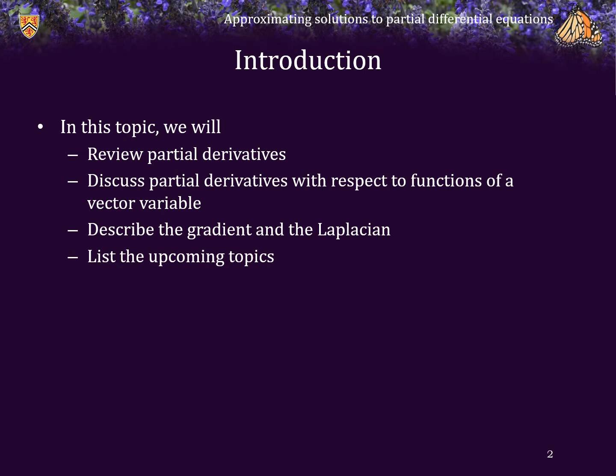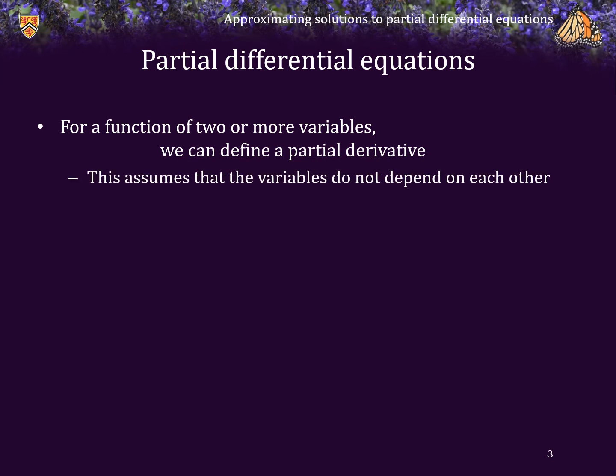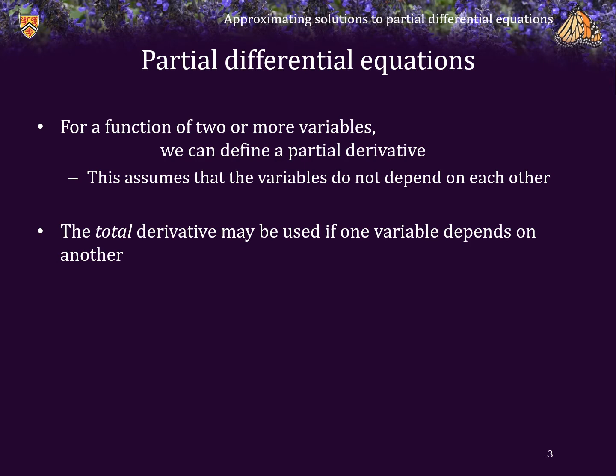We will list the upcoming topics we will be looking at. For a function of two or more variables we can always define a partial derivative. A partial derivative assumes that the variables do not depend on each other, so all of the variables are independent. The total derivative, on the other hand, may be used if one variable depends on another — for that refer to your calculus textbooks, but that's beyond the scope of this course.